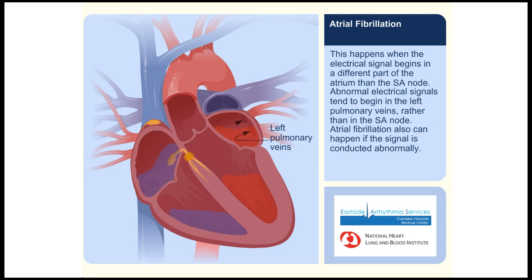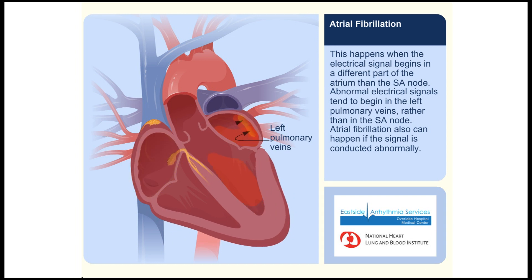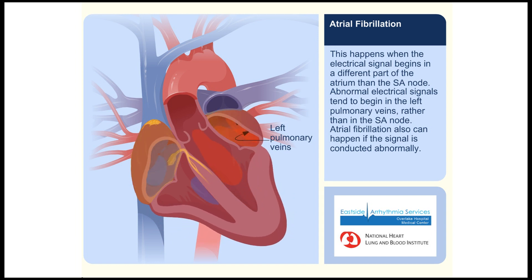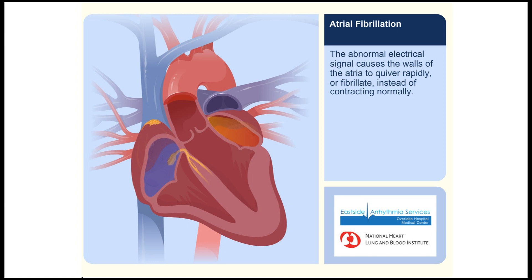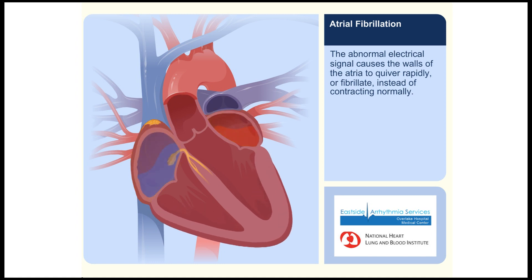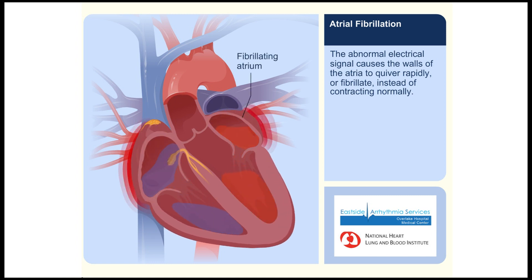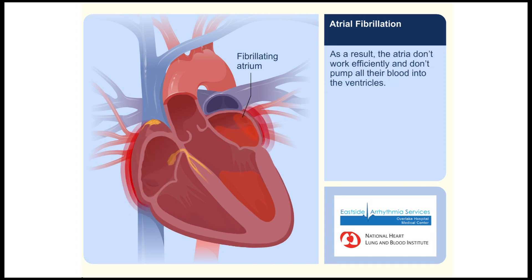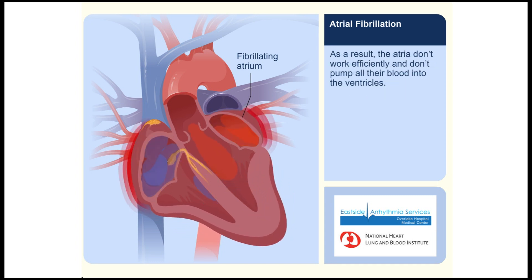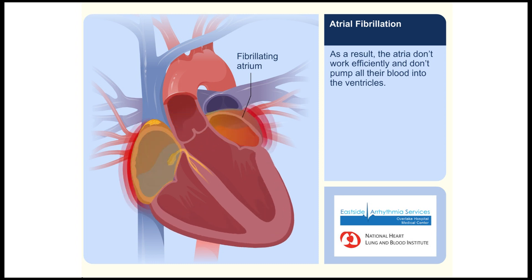Atrial fibrillation can also happen if the signal is conducted abnormally. The abnormal electrical signal causes the walls of the atria to quiver rapidly, or fibrillate, instead of contracting normally. As a result, the atria don't work efficiently and don't pump all their blood into the ventricles.